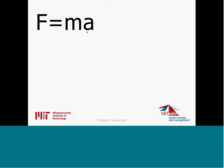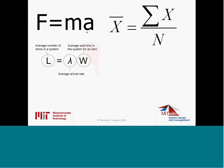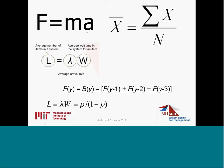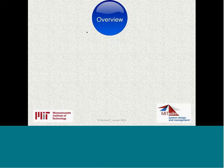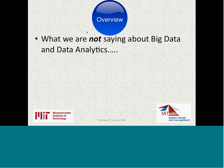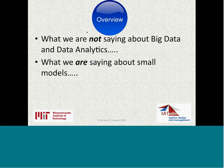Simple models — Newton's force equals mass times acceleration, which also applies in human systems as well as physical systems. The mean of a bunch of numbers or variables. We're going to talk about L equals lambda W, which applies to queues, linear difference equations, queuing equations with singularities, and even square root laws. These are the simple models we'll be discussing.